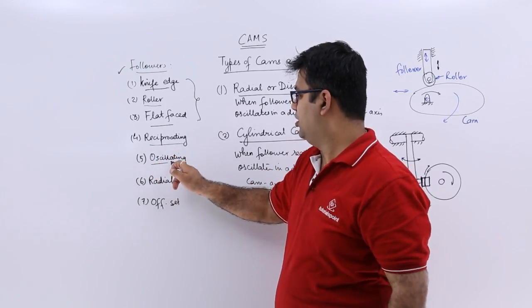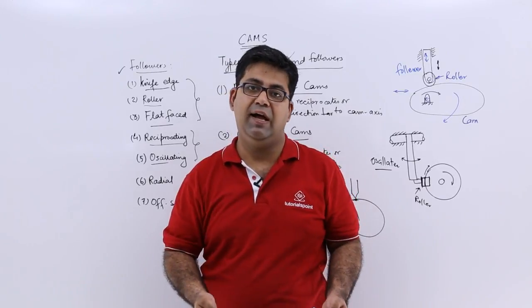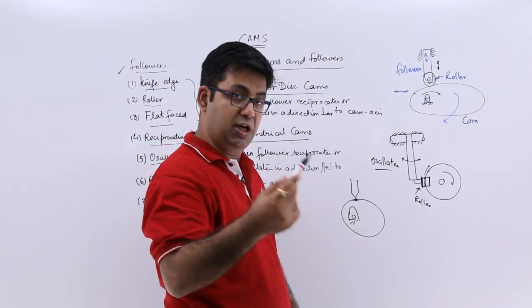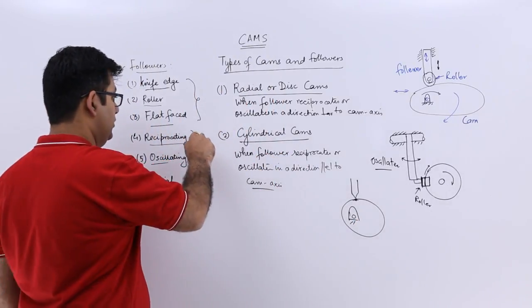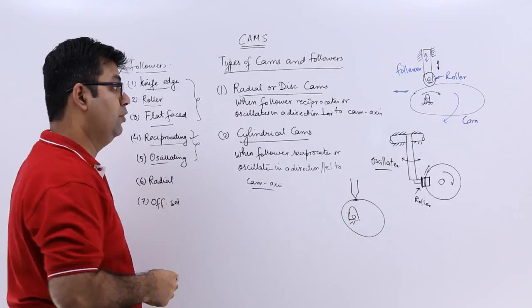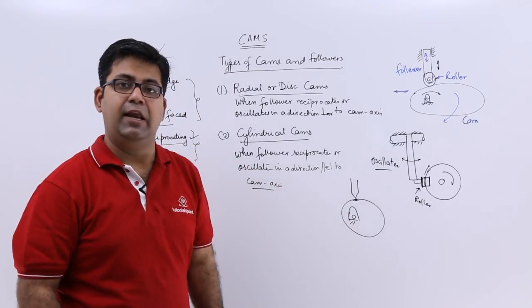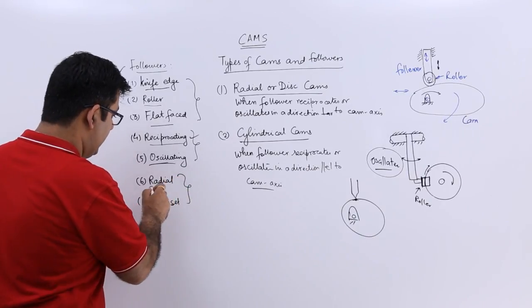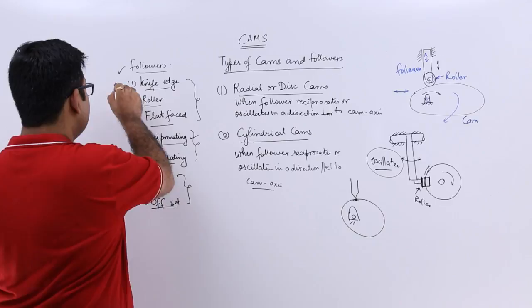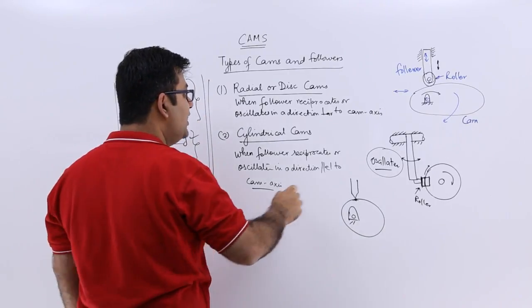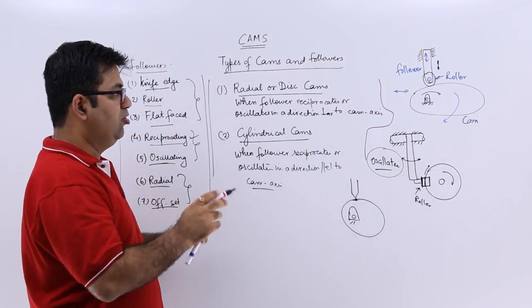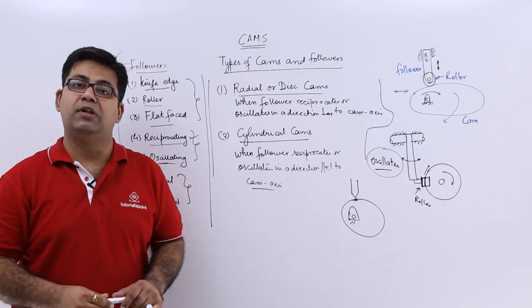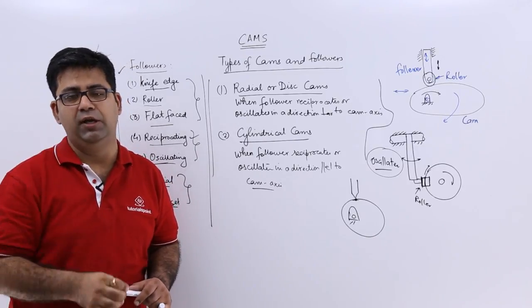Next, followers are classified as either reciprocating or oscillating, based on the type of motion the follower has with respect to the cam. The radial cam example consists of a reciprocating follower, while the cylindrical cam example has an oscillating follower. The last classification is radial or offset. So those are the types of followers and types of cams. I hope you have got a good introduction to cams and followers. Let's move on to the next video and talk about some basic cam terminology.